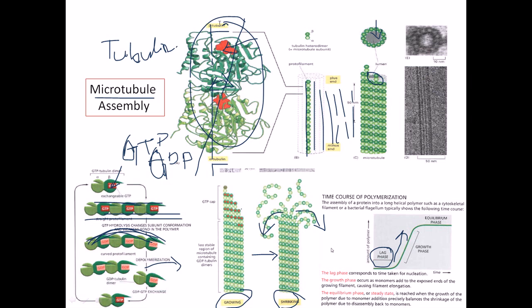At equilibrium, either assembly or disassembly is occurring. The assembly side is called the positive end and the disassembly side is called the negative end. At the positive end, tubulin is in the GTP-bound state; at the negative end, it is GDP-bound. Alpha tubulin makes the structure stable, while beta tubulin regulates assembly and disassembly - that's why beta tubulin is more important.